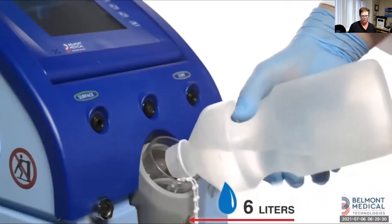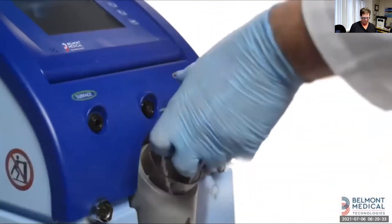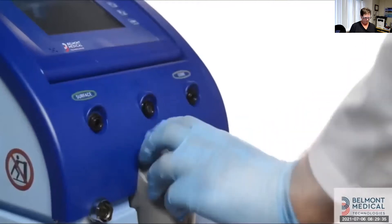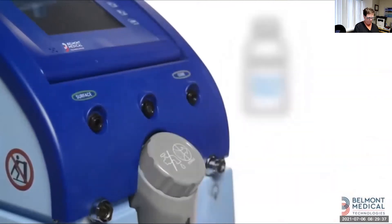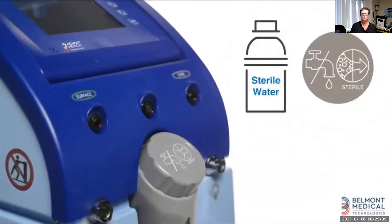First, fill the water tank up to the upper level line. A full tank has six liters of water. The system uses only sterile or 0.22 micron filtered tap water. Make sure to use only these kinds of water.